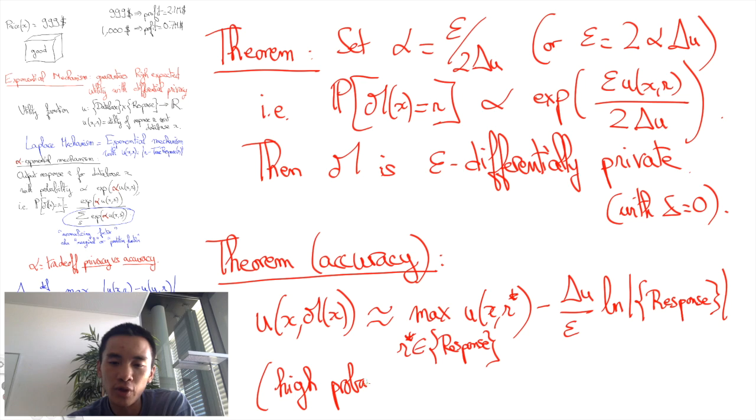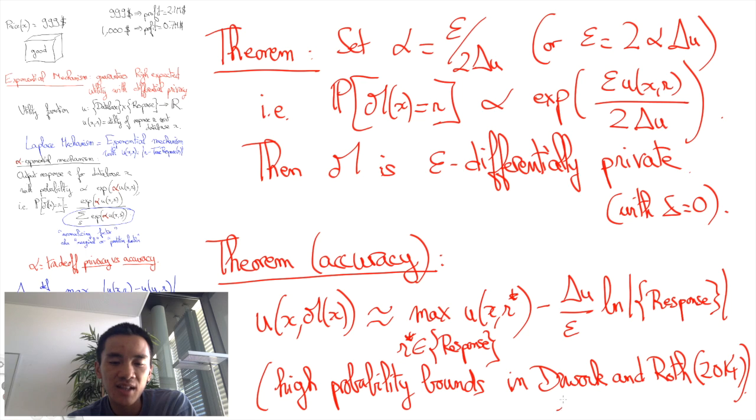There is a more formal version of this approximation that you can find in the book by Dwork and Roth on differential privacy, which says that our second term here is roughly a standard deviation of the utilities you get and that large deviations are exponentially rare. But this is beyond the scope of this video.